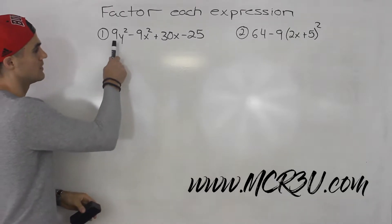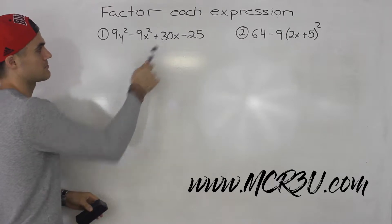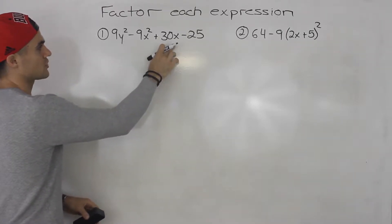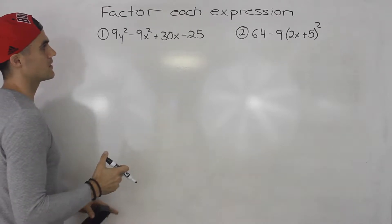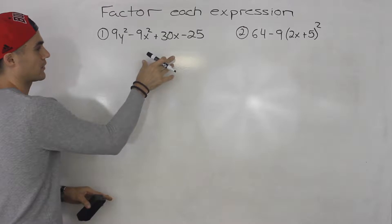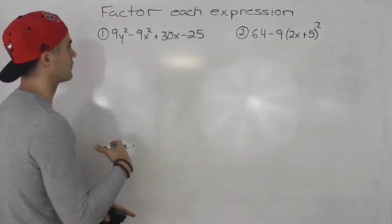Starting off with this one, we got 9y² minus 9x² plus 30x minus 25. Usually when you have four terms, it's going to be one of three things. You're either going to have to factor it by grouping, or you're going to have to do one by three factoring or three by one factoring.